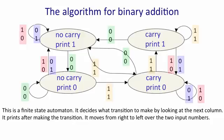And when it's in a state, it gets some input, which is the two numbers in the next column. And that input causes it to go into a new state.